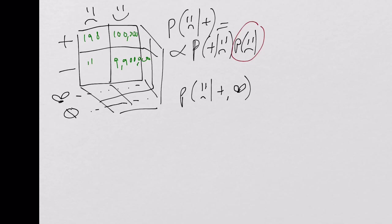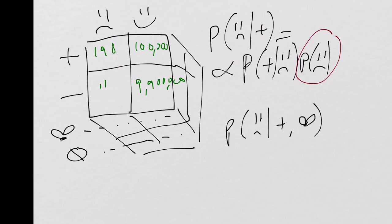A final comment: everything discussed so far assumes no independence or conditional independence between variables, so you have to sum over all hidden variables. But as is often the case in Bayesian networks, if you have conditional independence, you can save on summation. We'll see more about this when we discuss variable elimination.